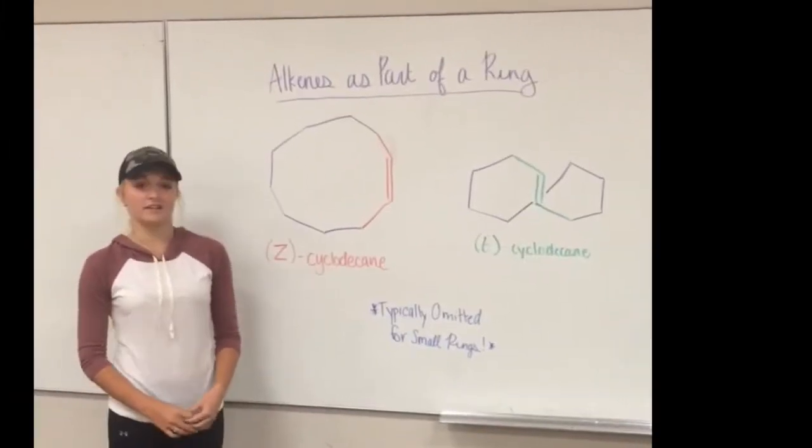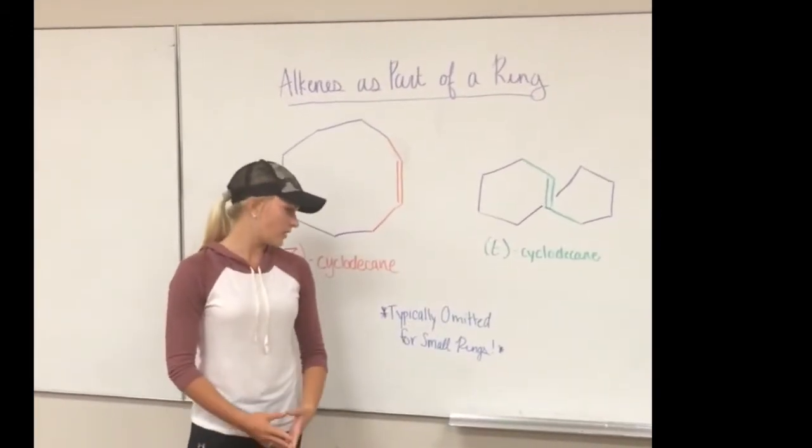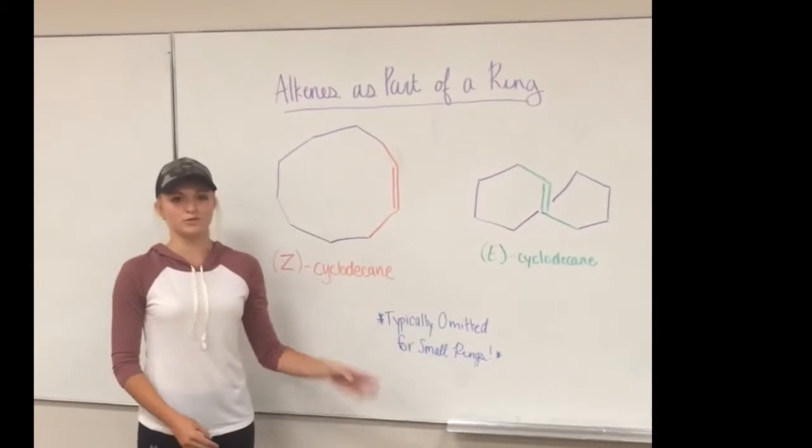The one that is part of a ring can typically have both a Z and an E configuration. However, for smaller rings it is typically omitted because the E configuration is less stable due to the ring strain.